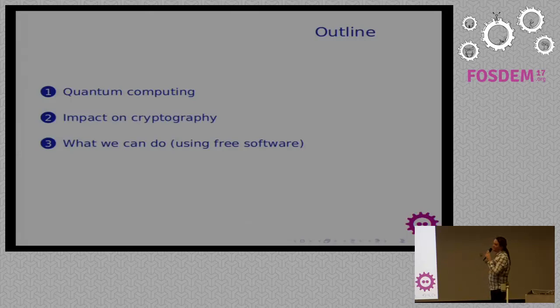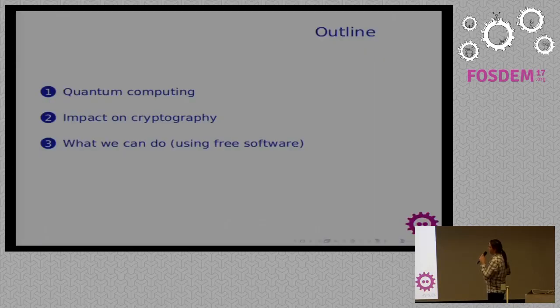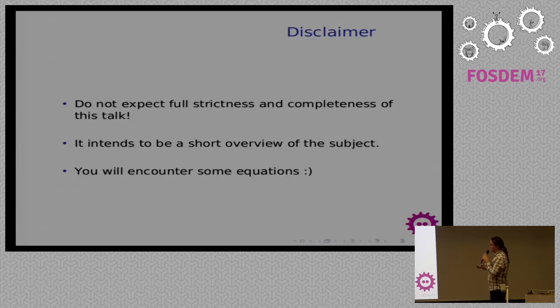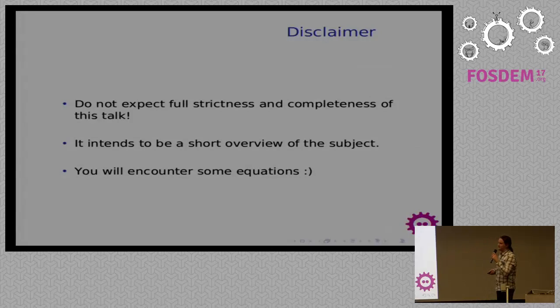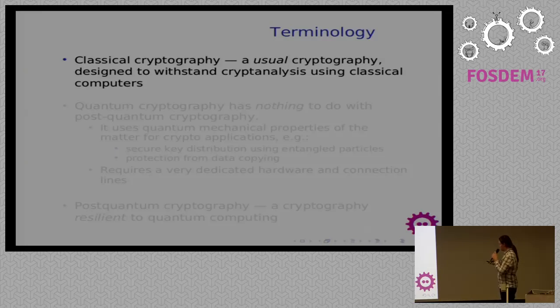So my talk will consist of three parts. First part will be what quantum computing is, how physics works here, how hardware works here, and you will find some physics in this part. Second part is how this impacts cryptography we use daily in our lives. You will find some math here. And the third part will be how can we deal with this problem, and what free software solutions are available to handle this. Please don't expect full strictness of this talk because it's just an overview, and I will skip some corner cases and some complicated matters. It's just impossible to fit all this in a small time. And you will encounter some equations. I will try to be simple, but you will still have to be a mess.